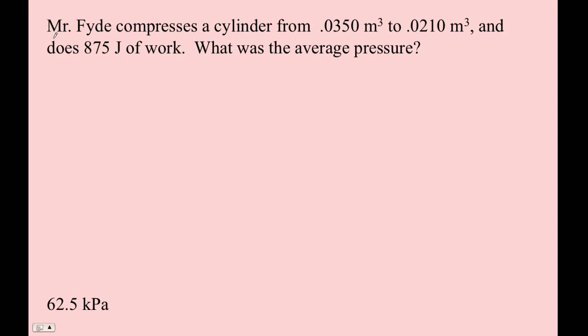Mr. Fyde compresses a cylinder from this. Compressing means the volume is going to get smaller. So our delta V is 0.0210... 0.0210 minus 0.0350 is equal to negative 0.014. We didn't need the calculator for that. 0.014 cubic meters.